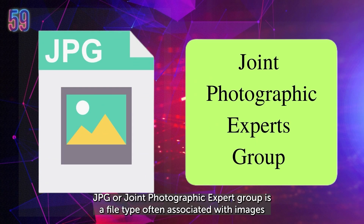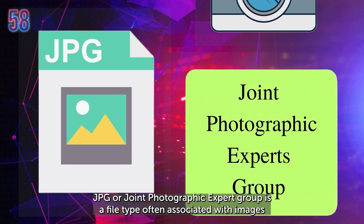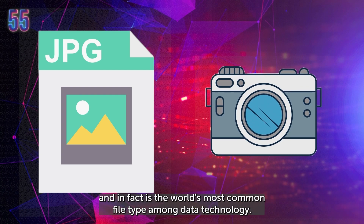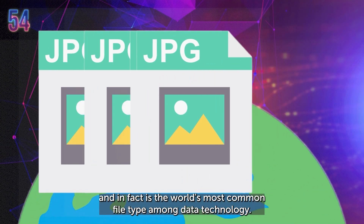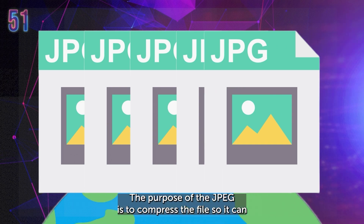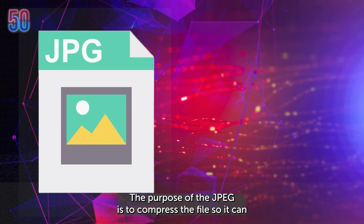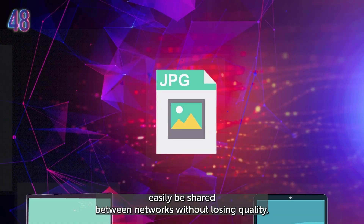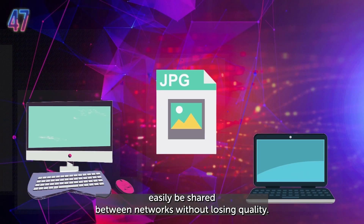JPG, or Joint Photographic Expert Group, is a file type often associated with images and, in fact, is the world's most common file type among data technology. The purpose of the JPEG is to compress the file so it can easily be shared between networks without losing quality.